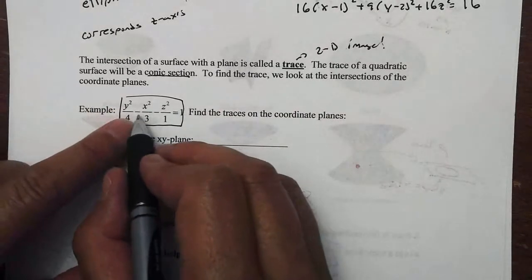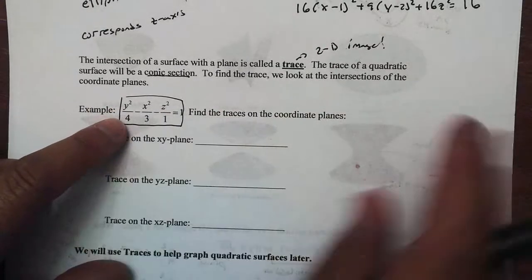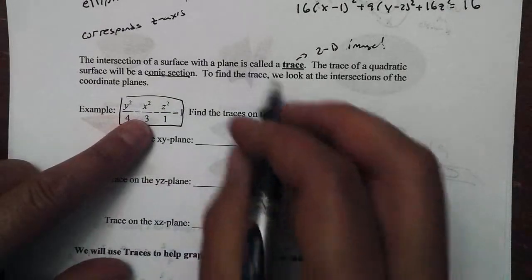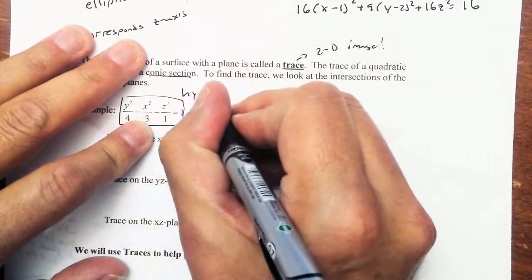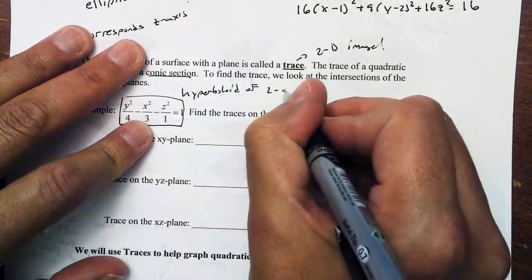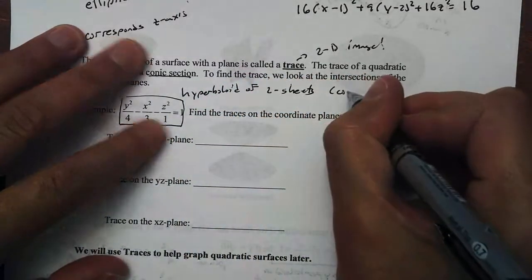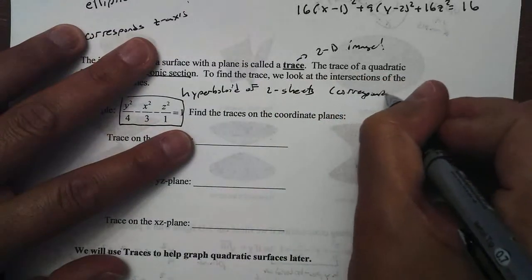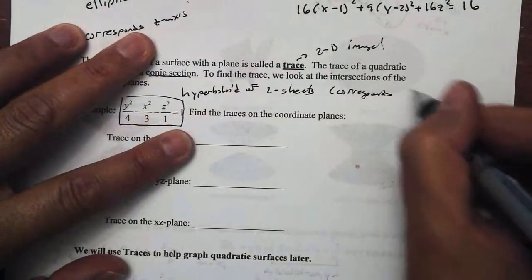Now, this is where 2 are negative, but 1 is positive. They're all squared. This is our hyperboloid of 2 sheets. Of 2 sheets. In other words, and this corresponds to the y-axis.